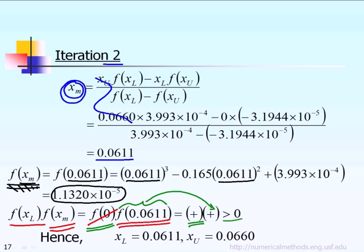Now the story is slightly different than before. Because this product FXL times FXM, that product now is positive, not negative anymore. What does that mean? That means the new X of L will be different from the previous lower bound, but the new upper bound is the same thing as the previous upper bound. So this is the new pair of lower bound and upper bound.